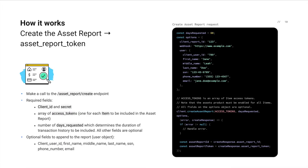The asset report create endpoint requires you to specify two things: first, the number of days of historical transaction data you want included, and second, the access token or tokens to be included in the report. Unlike other Plaid products, assets supports aggregating multiple Plaid items into one report. This way you can prompt the borrower to connect all of their financial accounts via Plaid Link and then bundle them into one asset report.